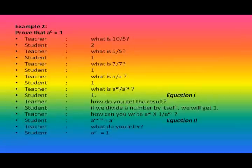Example 2: Prove that a^0 is equal to 1. I will prove this statement by using the heuristic method. The teacher asked the students, what is 10 ÷ 5? The students replied, 2. The teacher asked, what is 5 ÷ 5? The students replied, 1. Then the teacher asked, what is 10 ÷ 10? The students immediately replied, 1. Then the teacher asked, what is a ÷ a? The students replied, 1.